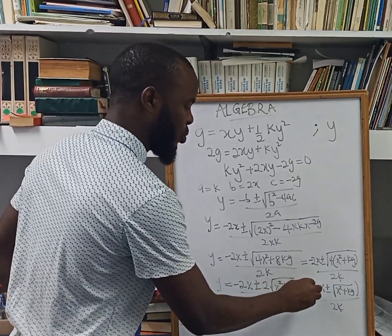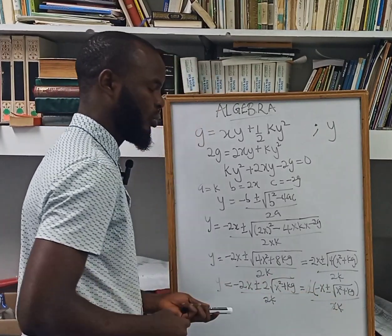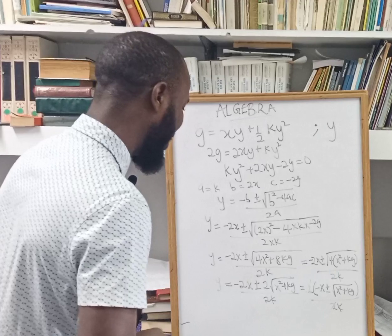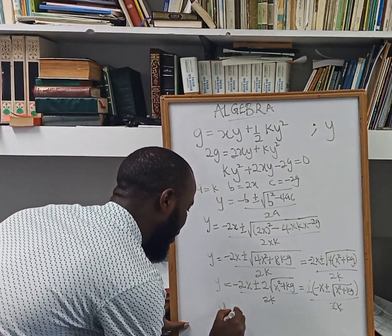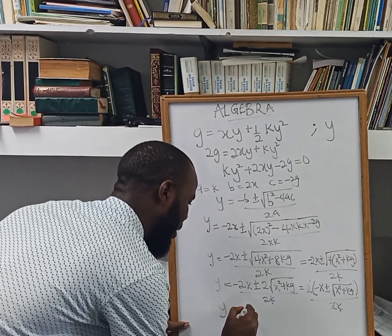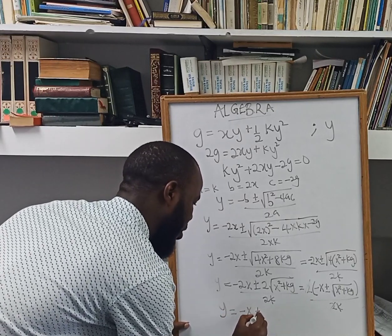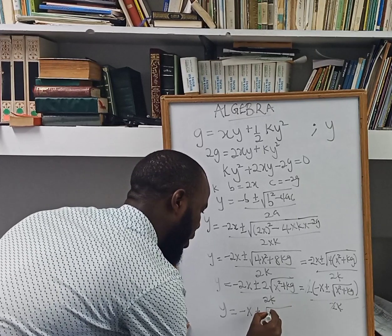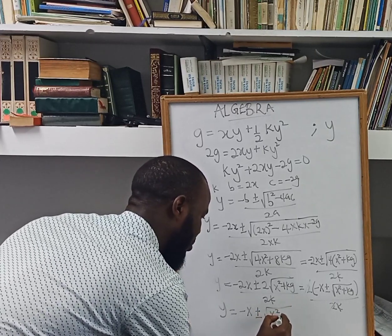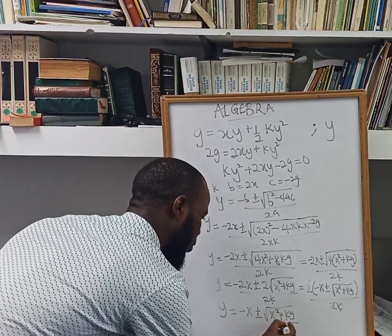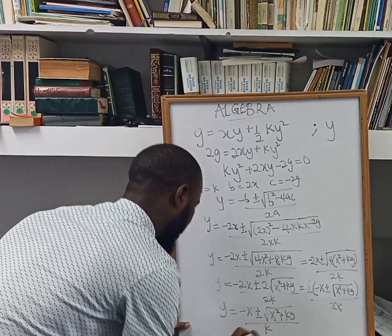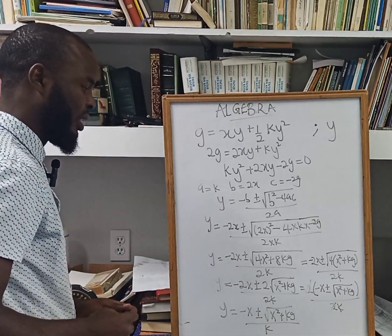So looking at this, 2 can cancel out 2. And finally, I am going to have y equals negative x plus or minus root x squared plus 2kg, all over k. And this is going to be my final answer.